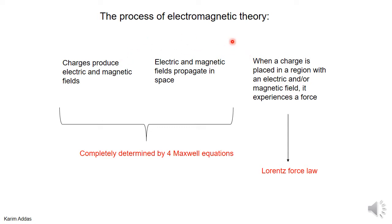This three-step process is what electricity and magnetism is about. It turns out there are four equations called Maxwell's equations that completely determine these two aspects, and the Lorentz force law determines what force acts on a charge in a field. These four equations have very high importance because everything about how charges produce fields and how fields propagate in space is determined by them.